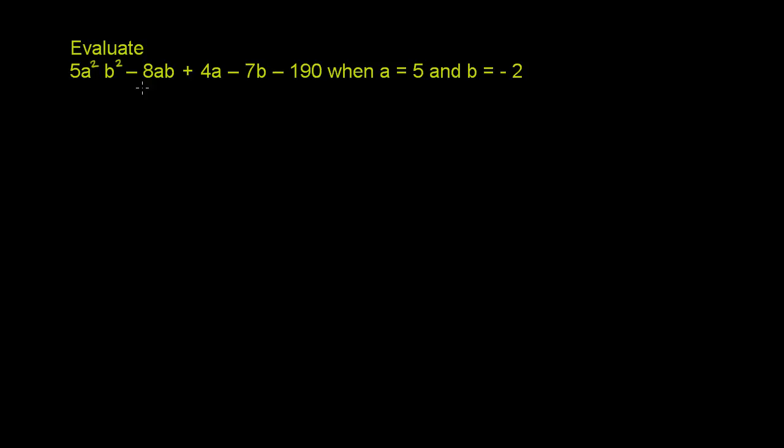Evaluate 5a²b² - 8ab + 4a - 7b - 190 when a is equal to 5 and b is equal to negative 2.